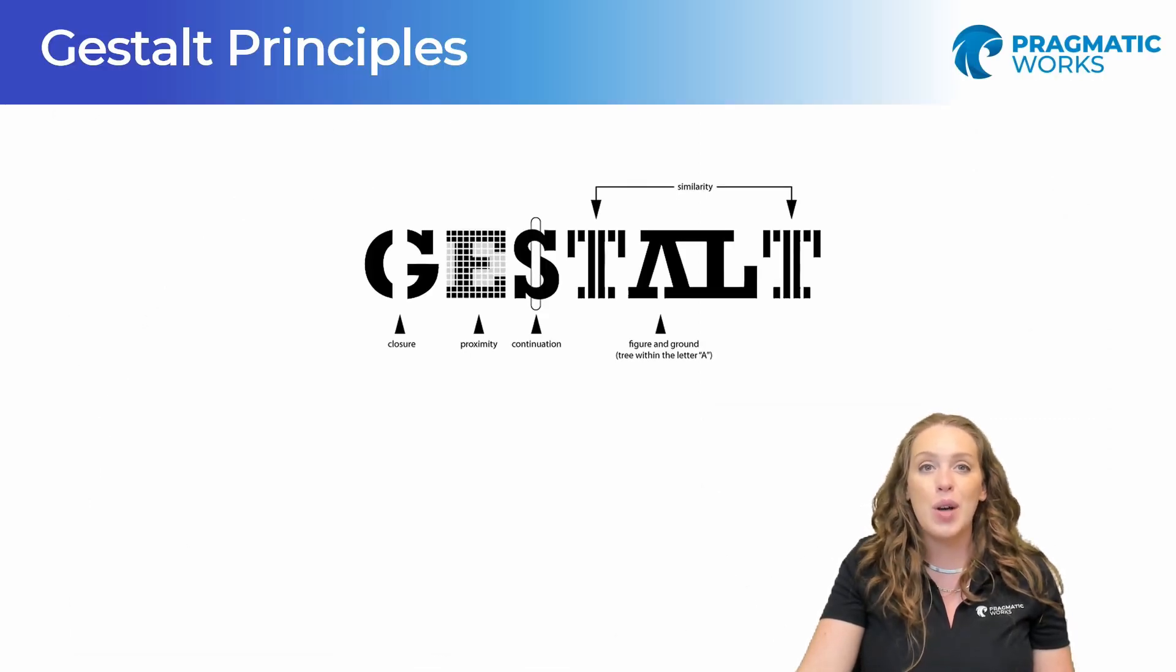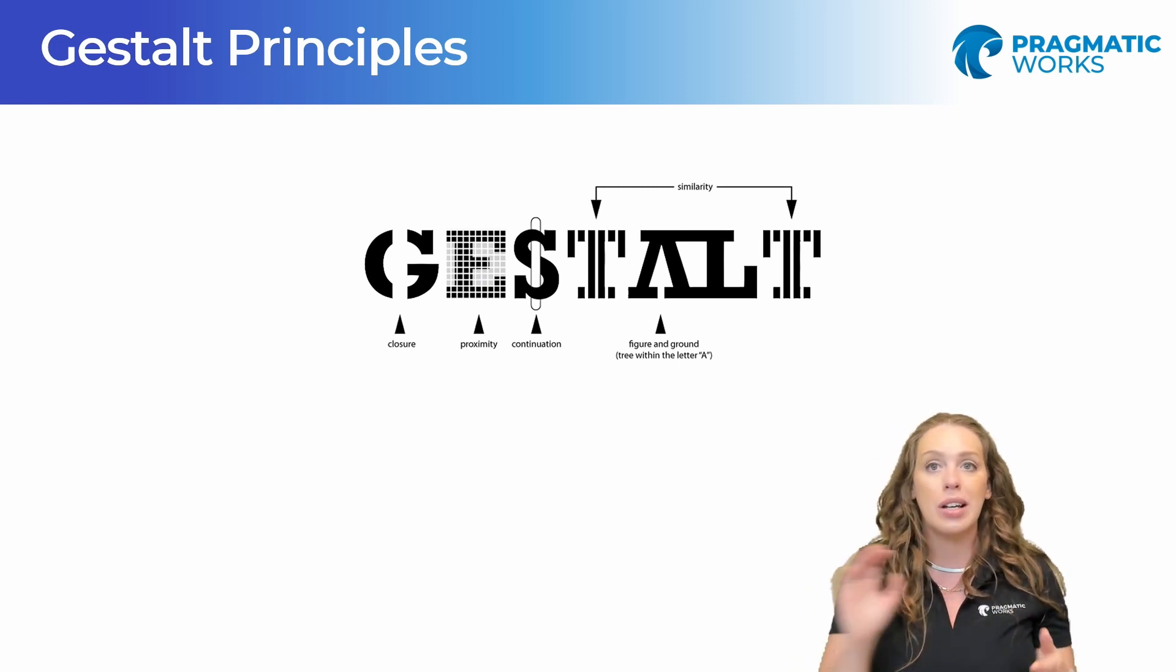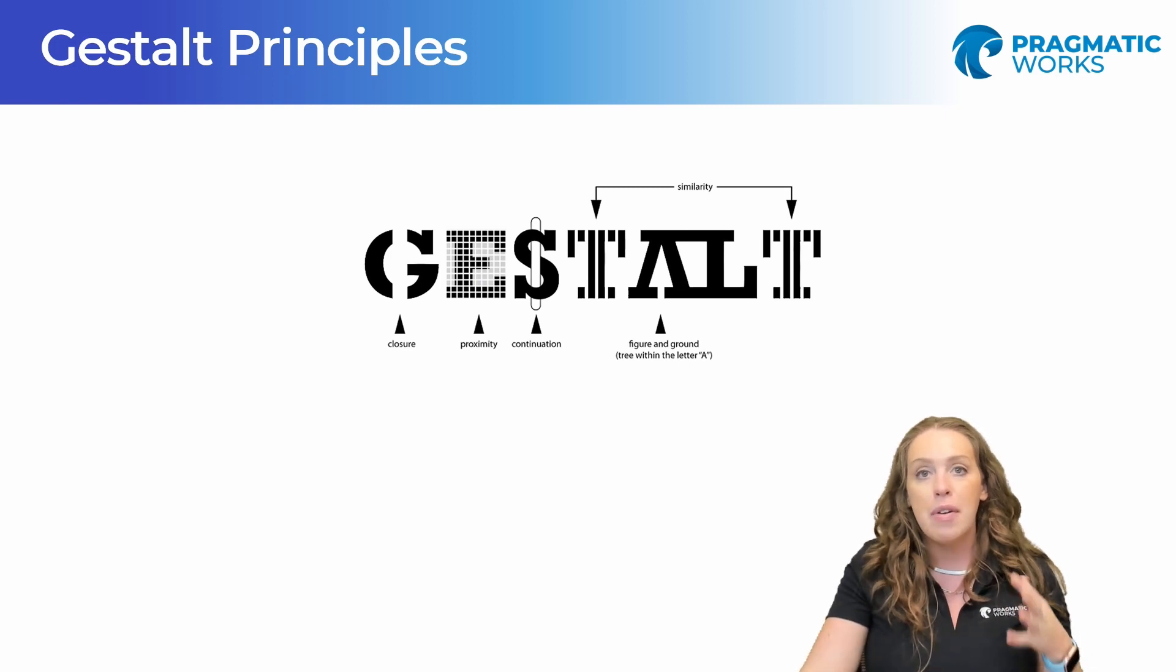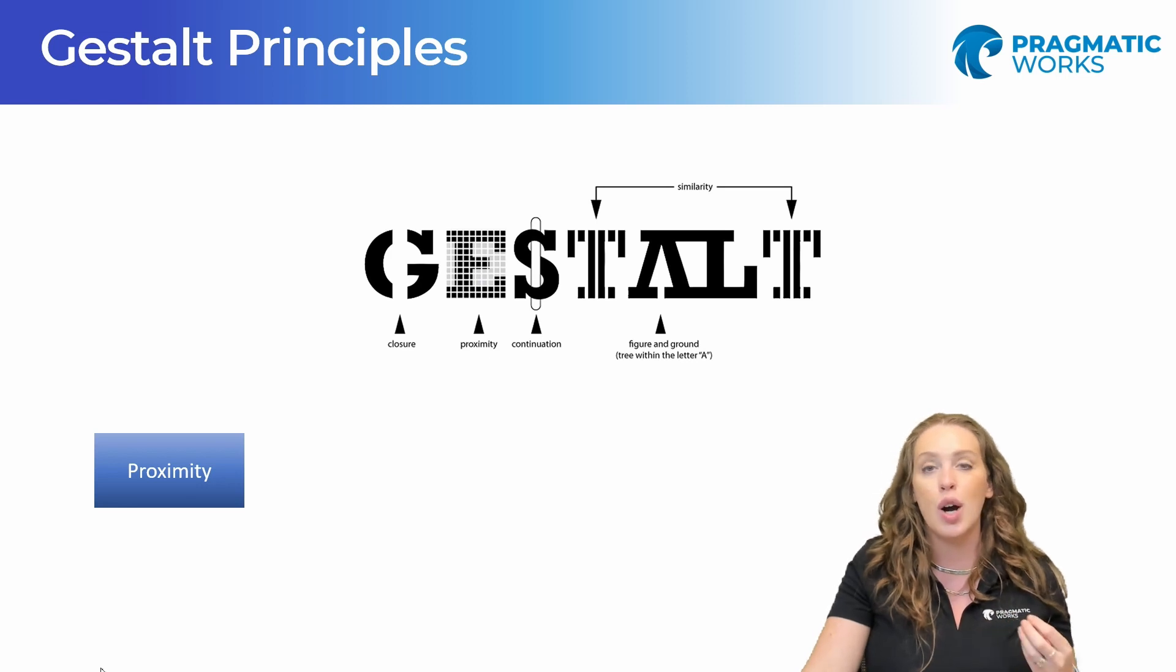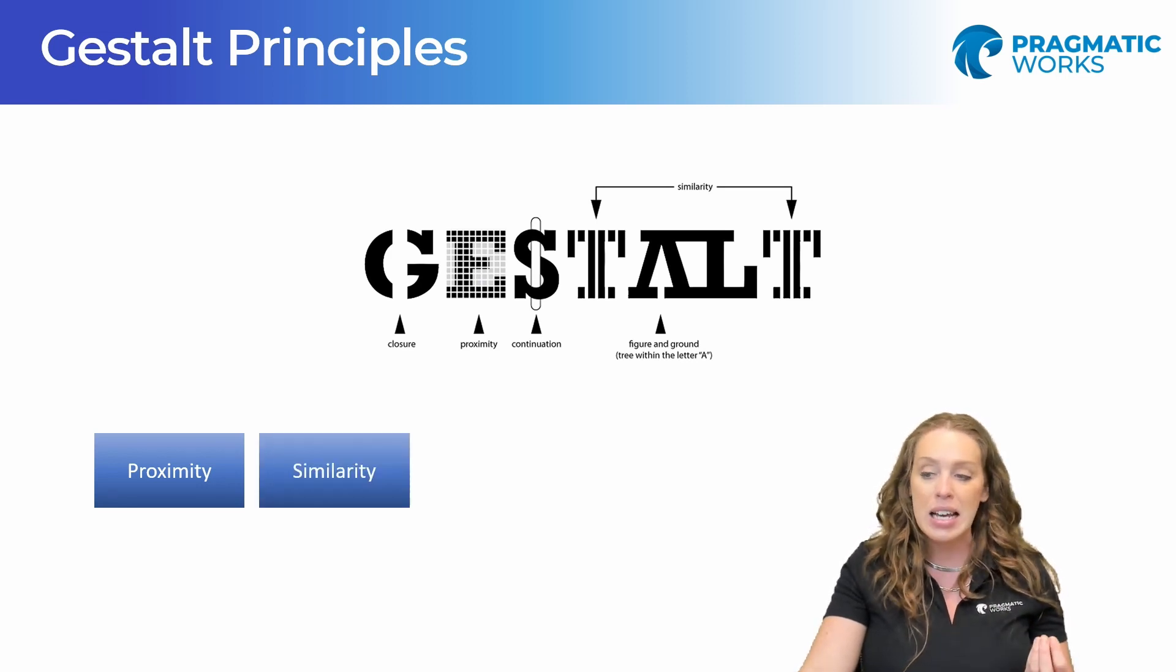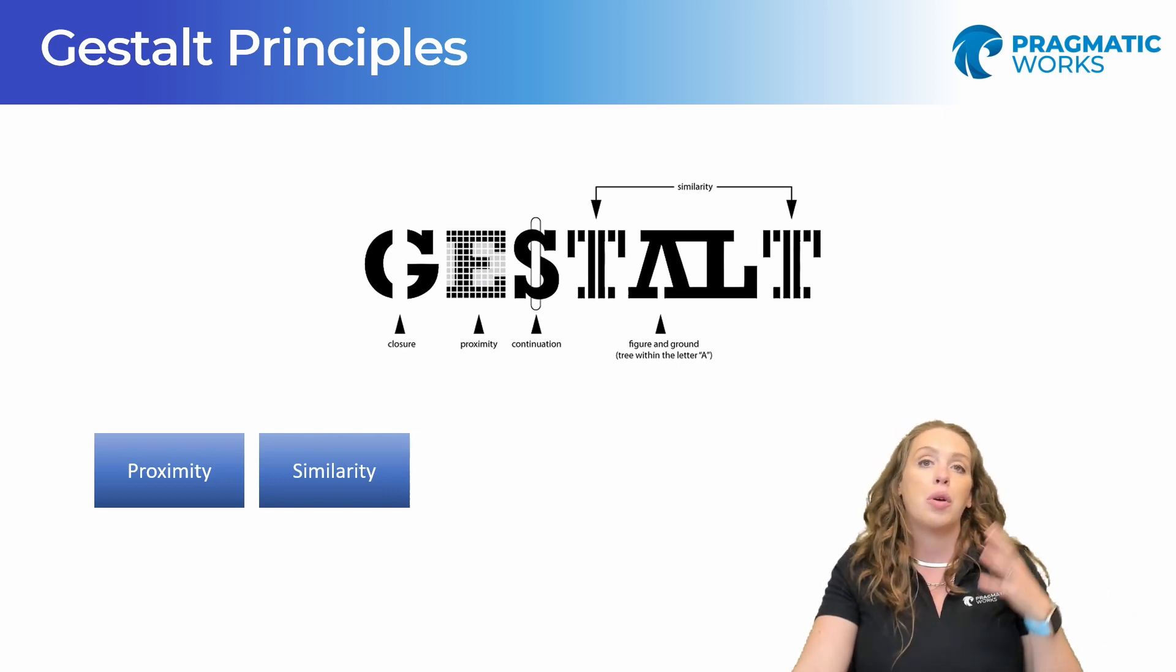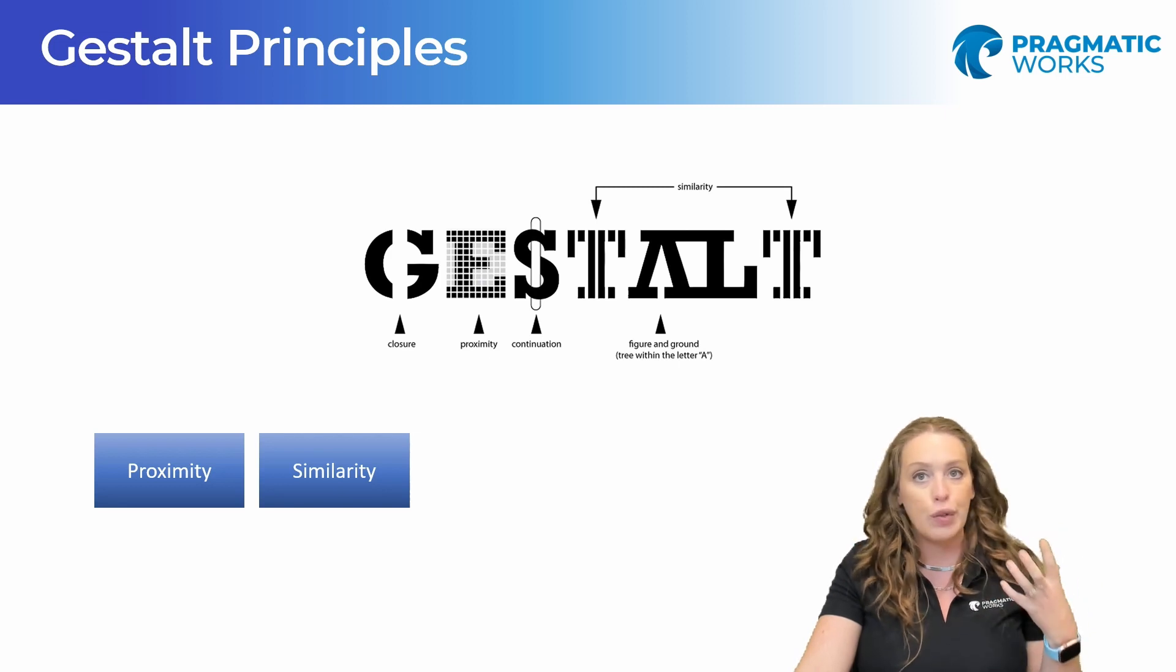We then have Gestalt principles. This is another way we can understand how our brain sees and interacts with things. This was actually uncovered by a German psychologist, and it's made up of these different principles. We have proximity, so how close things are to each other will make them seem related. Similarity—we have the same background on things, or they just look really similar. We're going to associate those together.